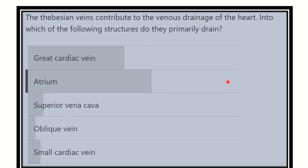Hey everyone, welcome to another question and answer session. The Thebesian vein contributes to the venous drainage of the heart. Into which of the following structures do they primarily drain?